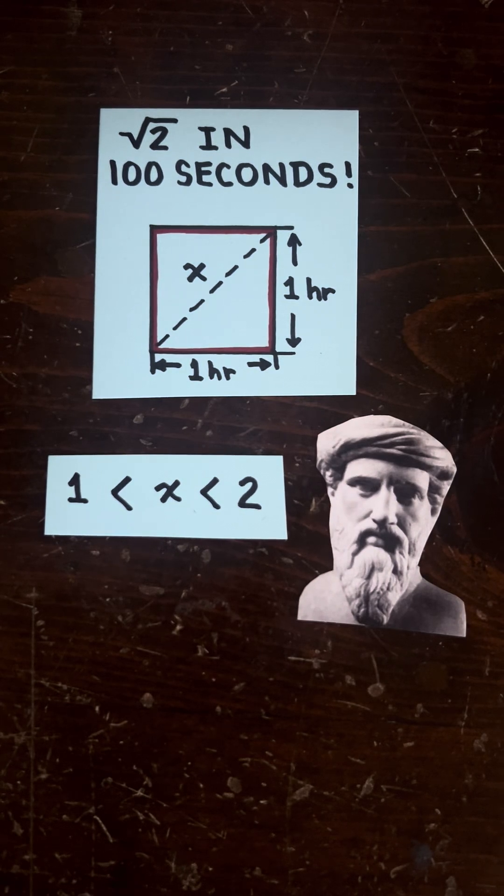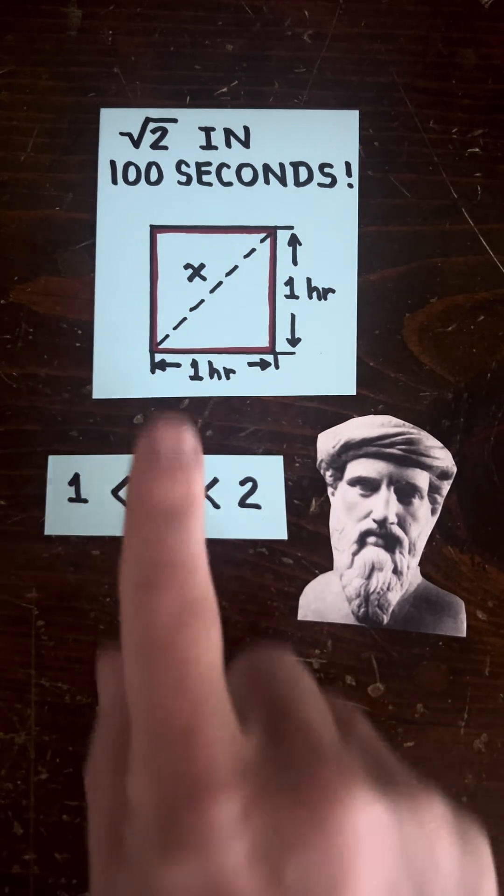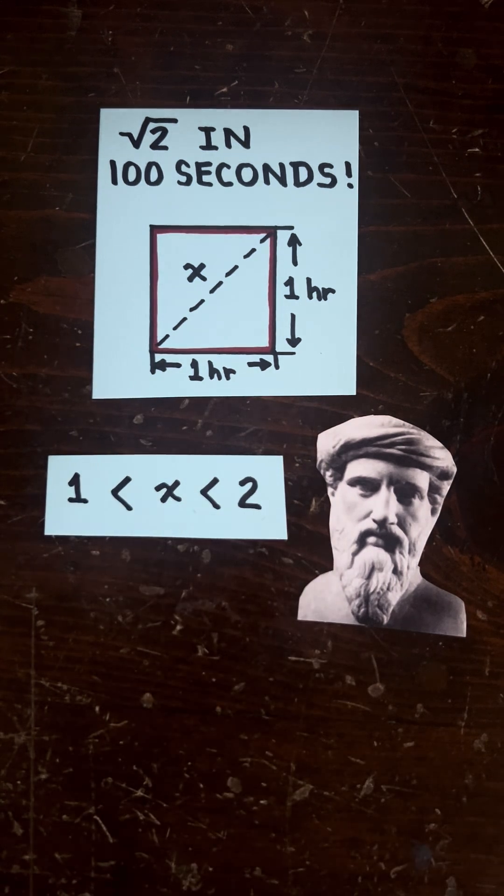The square root of two in a hundred seconds. Somewhere, some ancient person said, hey, instead of walking an hour this way and an hour that way, why don't we take a shortcut?